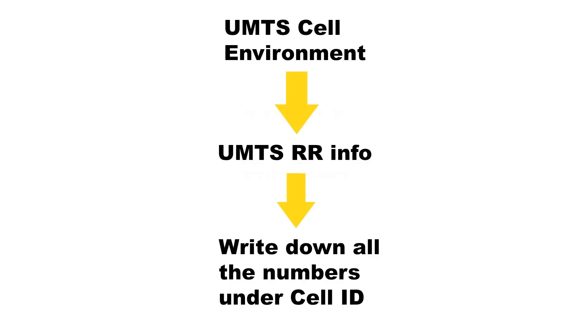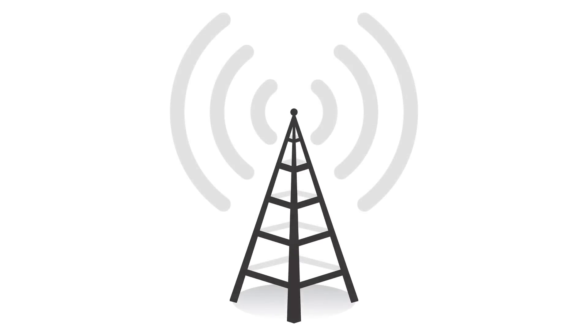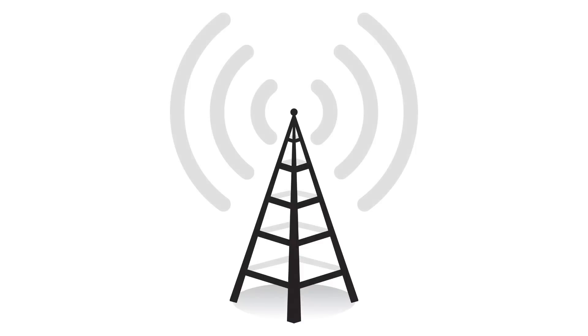Step 1: Go to the section called UMTS Environment, then UMTS RR Info, and write down all the numbers under Cell ID. These numbers are the basic stations located nearby. Your phone will connect by default to the one that emits the best signal.